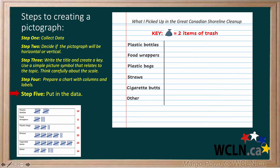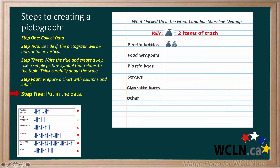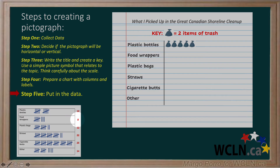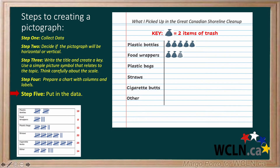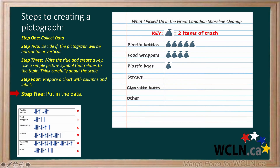Step 5: Put in the data. Since Holly picked up 10 plastic bottles, she adds 5 trash bags. Each trash bag is worth 2, so they count up by 2s: 2, 4, 6, 8, 10. Since Holly picked up 8 food wrappers, she adds 4 trash bags. For 12 plastic bags, she represents them using 6 symbols.